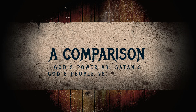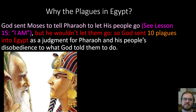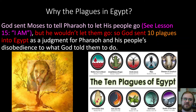I'm going to do a comparison between God's power and Satan's power, and a comparison between God's people — an obedient people — and Pharaoh's people — a disobedient people. Rather than reading chapters 7-12 out of Exodus, which would take a really long time, I put them into two nice charts. God sent Moses to tell Pharaoh to let his people go, and Pharaoh wouldn't, so God sent the 10 plagues into Egypt as a judgment for their disobedience.